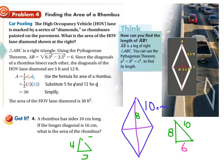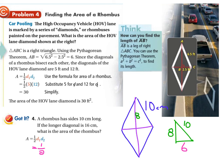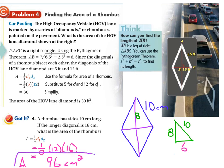Now that we know that, we can say: our formula is one half diagonal 1 times diagonal 2. We fill in: one half times 12 times 16. You can take one half of 12, which is 6, and 6 times 16 is 96. They were centimeters and it's area, so it is 96 centimeters squared for the area of this figure. The video is done and you can get started on your work. Hope that all made sense to you. Good luck. Email me any questions you have.